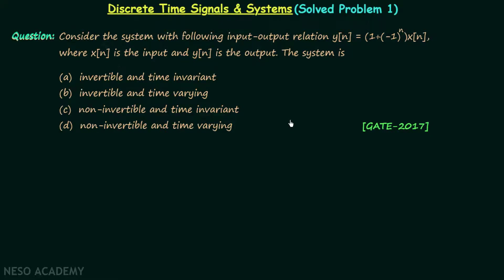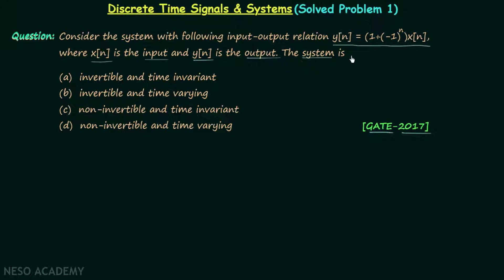The question we are going to solve in this lecture is taken from the GATE 2017 exam. According to the question, we need to consider the system with the following input-output relation: y[n] = (1 + (-1)^n) * x[n], where x[n] is the input of the system and y[n] is the output. We are required to comment about the nature of the system.